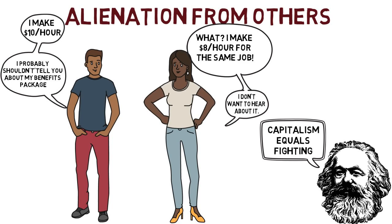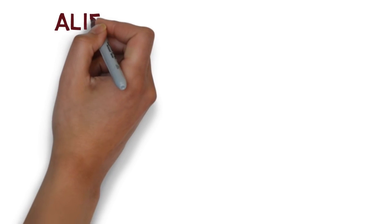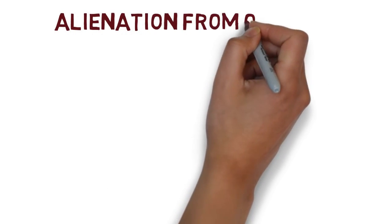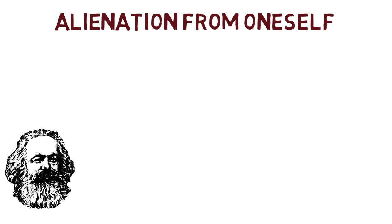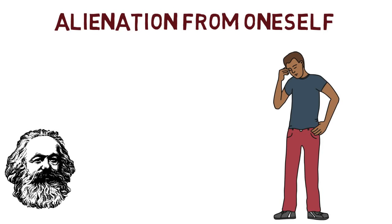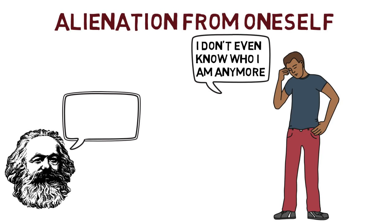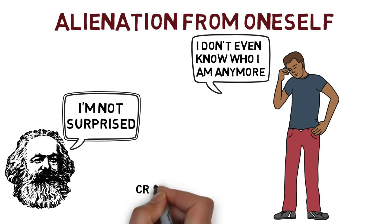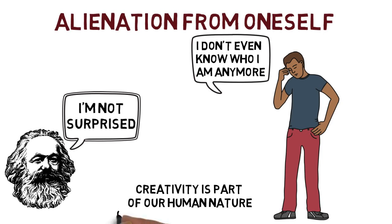The last type of alienation is alienation from oneself. Alienation from oneself robs a person of all they can be and contribute in the world. As stated, Marx believed that what we contribute to the world in terms of our work is part of our species' essence or what makes us human. What we contribute to the world is a manifestation of our creativity and creativity is an essential part of our human nature.